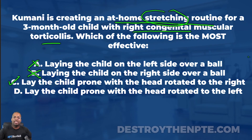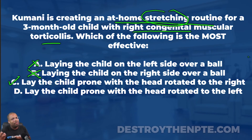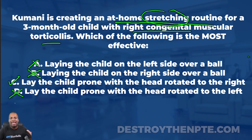Option D: lay the child prone with the head rotated to the left. I like the prone/tummy time positioning, but if I rotate the head to the left, that's not stretching anything. Remember, the right SCM is already rotating them to the left — so positioning them to the left is not going to stretch anything at all; it's actually the opposite of what I want. Option D gets an X, leaving us with our best answer: C.